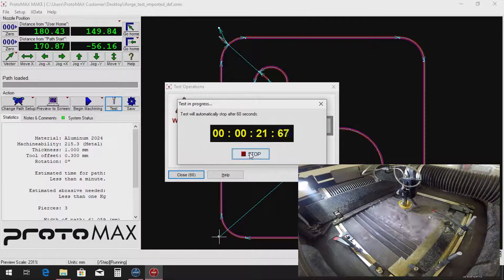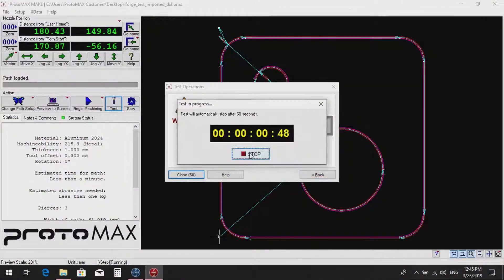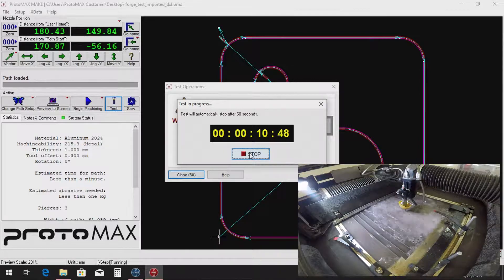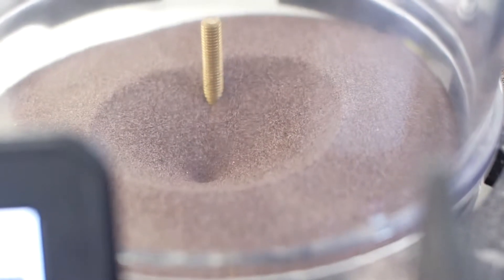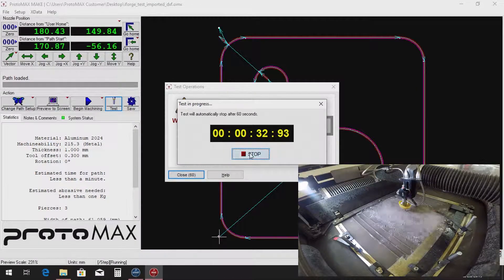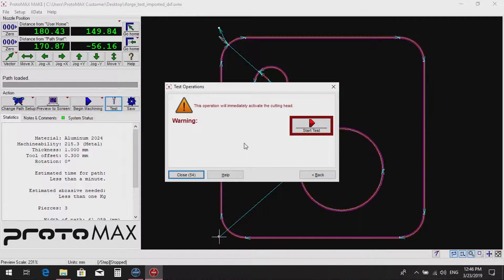After the test finishes, open the lid and reconnect the garnet feed. Then perform the test again, watching the garnet feed carefully for the movement of abrasive. This test can be ended once material can be seen moving through the tube. The machine is now ready to cut.